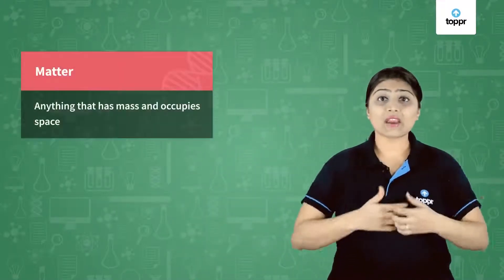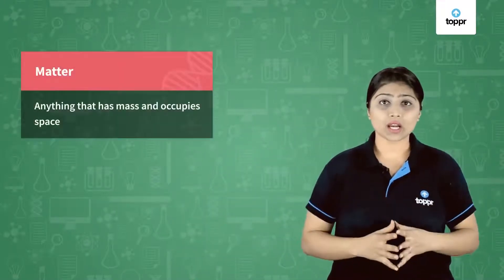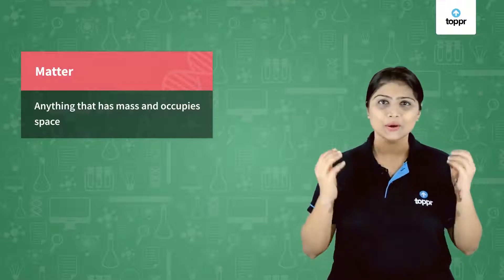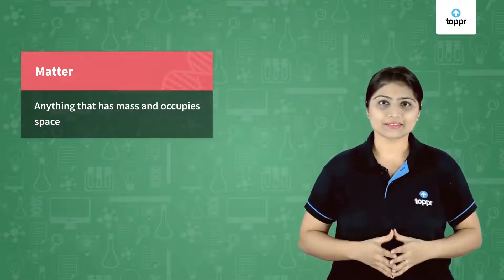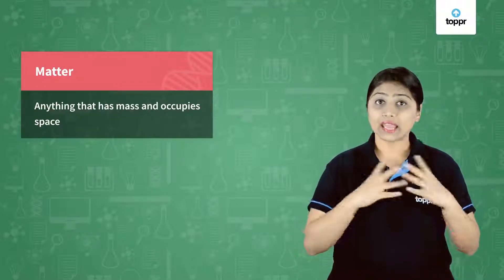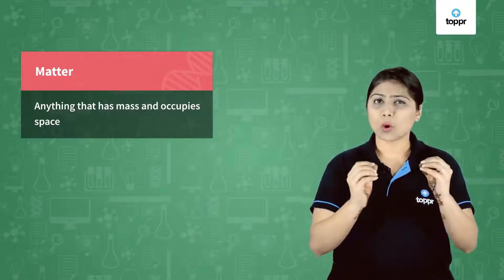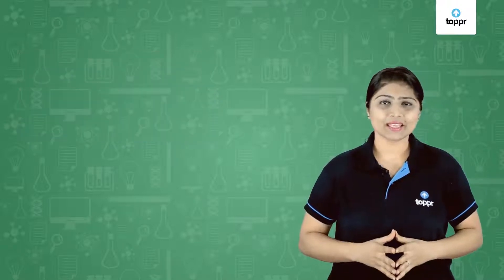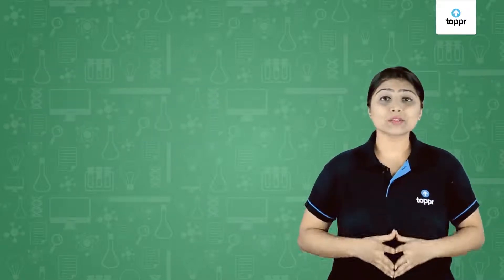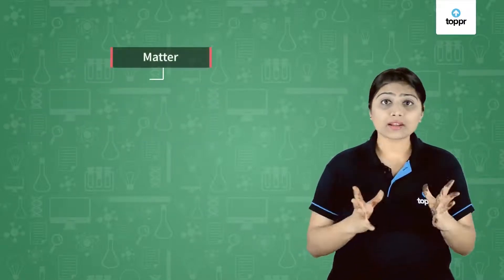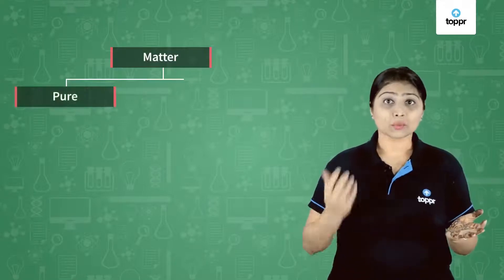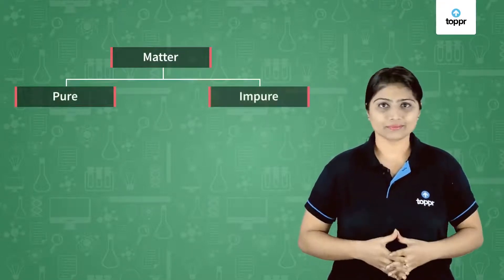Matter. We know that everything around us that has mass and occupies space is called matter, and every matter is made up of small particles. In this lesson we shall see which matter around us is pure and which is impure.